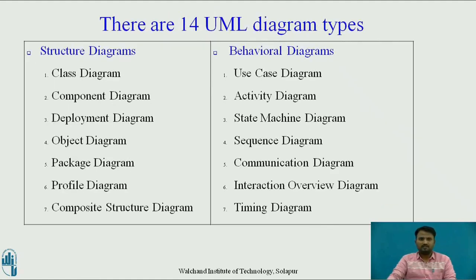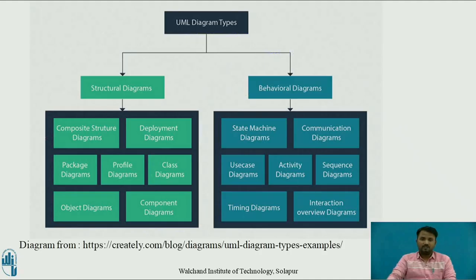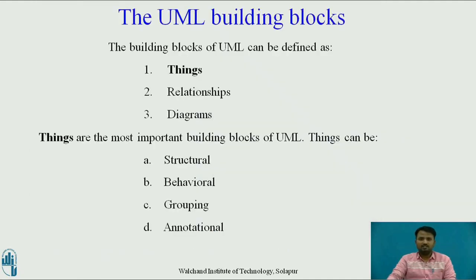We can categorize UML diagrams in two ways: Structural Diagram and Behavioral Diagram. There are three building blocks of UML. Things are the most important building blocks of UML. Things can be Structural, Behavioral, Grouping, or Annotational.